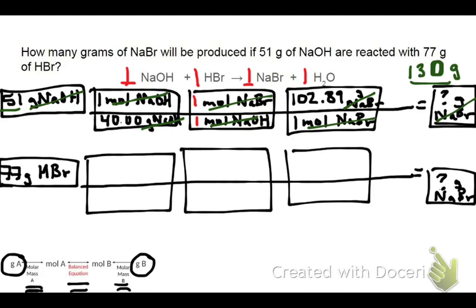We don't know for sure if we're going to run out of sodium hydroxide first, so we need to run our second stoichiometry problem. Looking at our 77 grams of HBr, we're going to do the same steps — a molar mass conversion using one mole of HBr. Looking up the molecular weight of HBr, it turns out to be about 80.91 grams, which comes from adding up hydrogen and bromine on the periodic table. We make sure our grams of HBr cancel, and we always want to double-check that to make sure we didn't flip one of our conversion factors by mistake.